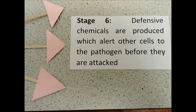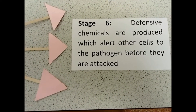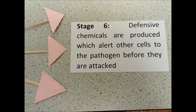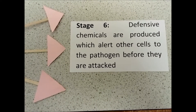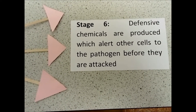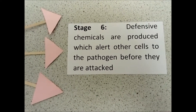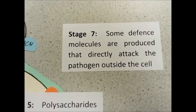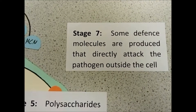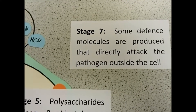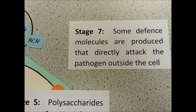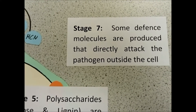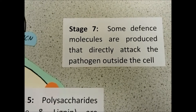At the same time, other defensive chemicals are produced that alert other cells nearby to the fact that the plant has been infected. And some plants produce molecules that directly attack the pathogens outside of the cell.